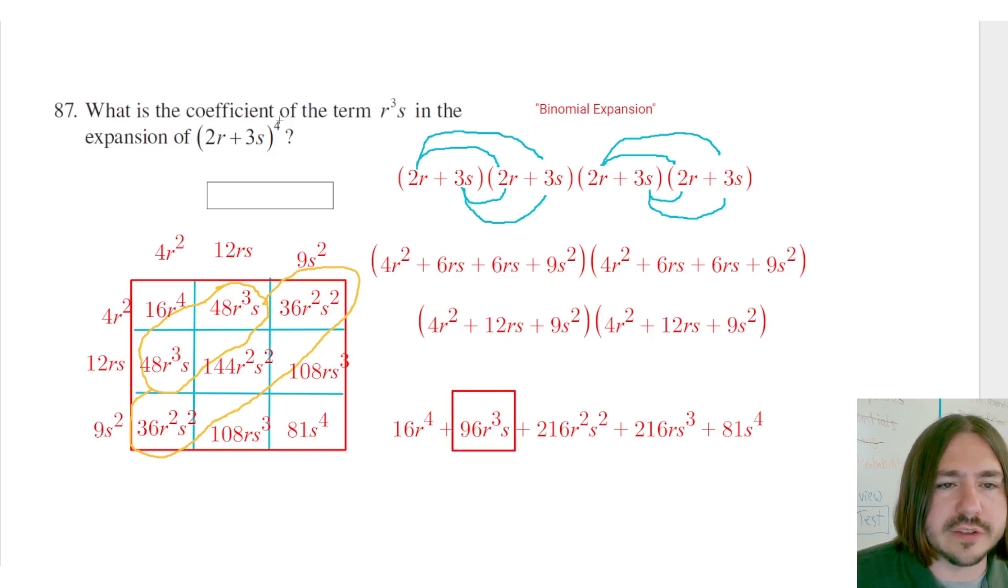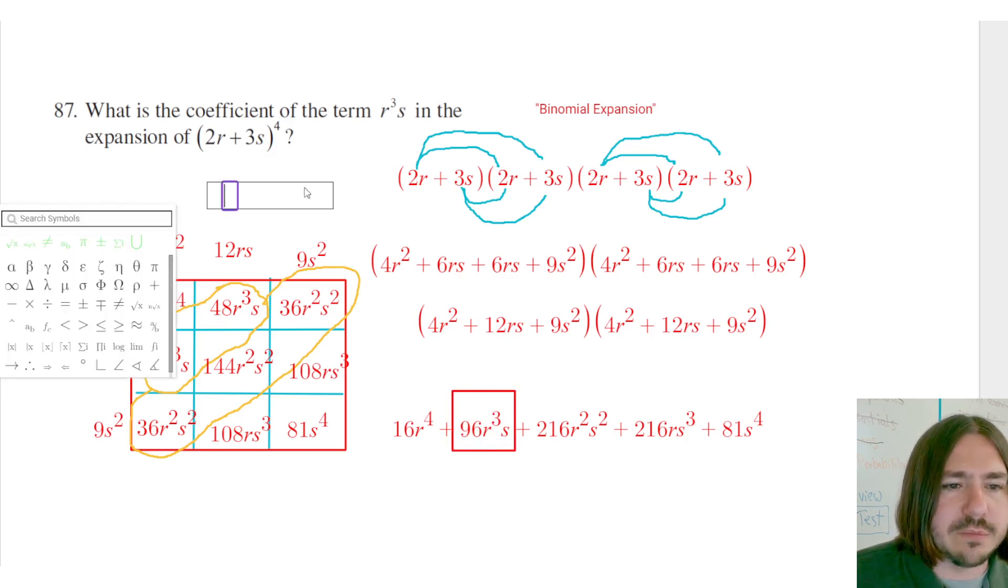So the term that we actually really want is going to be this guy right here. Because it's asking what is the coefficient of the term r cubed s in the expansion. And the coefficient is going to be 96. So I did more work definitely than was required.